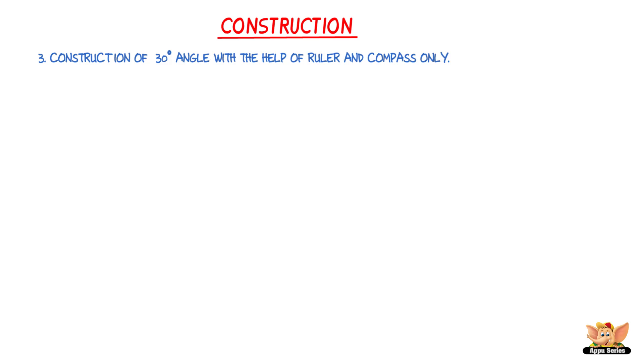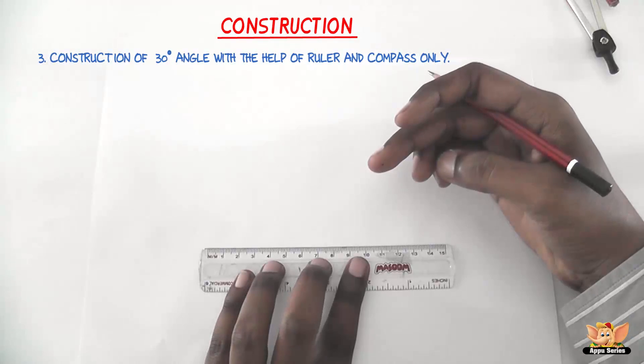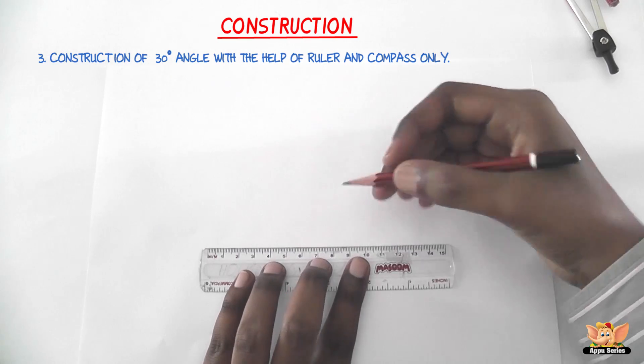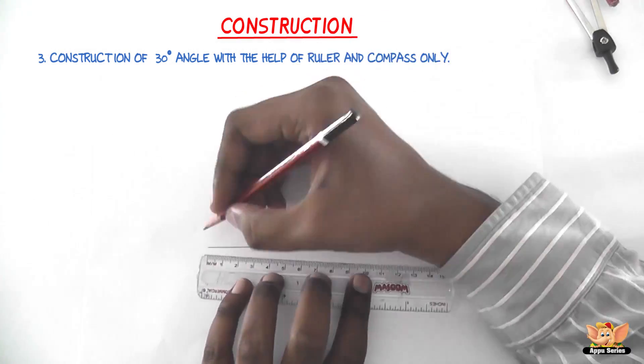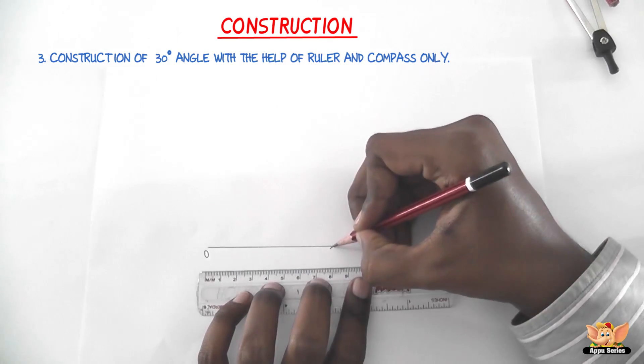By following the steps that we used to draw an angle of 60 degrees, construct an angle AOB which is equal to 60 degrees. The first step is draw ray OA of any convenient length.